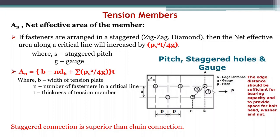Net effective area of a member when subjected to rupture failure. If the fasteners are arranged in a staggered, zigzag or diamond pattern, then the net effective area along the critical line will be increased by PS² × T / 4G, where PS is the staggered pitch and G is the gauge. In general, the net area An is equal to width into thickness.